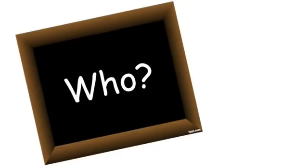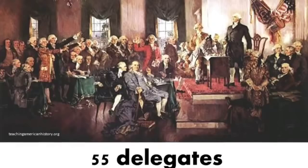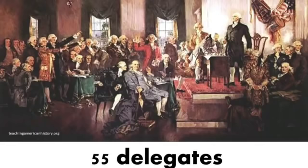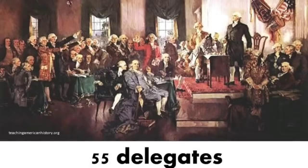So, who were the people at the convention? Twelve of the thirteen states sent a total of fifty-five representatives, or delegates, to the convention. Rhode Island was the only state that didn't send anybody. They figured that if they didn't send anyone, then nothing could get done. But as we'll see, they'll be proved wrong.